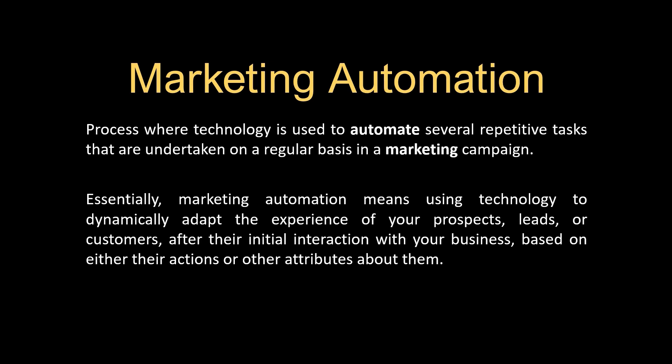Today when people refer to automation in online marketing, they're usually referring to specifically workflows that use smart logic to take action based on how prospects behave or other parameters. So basically, marketing automation today means using technology to dynamically adapt the experience of your prospects, leads, or customers after their initial interaction with your business, based on either their actions or other attributes about them.